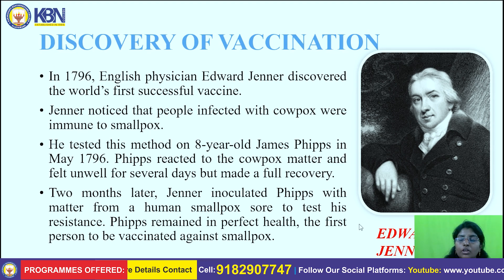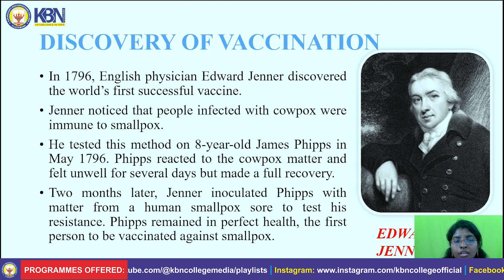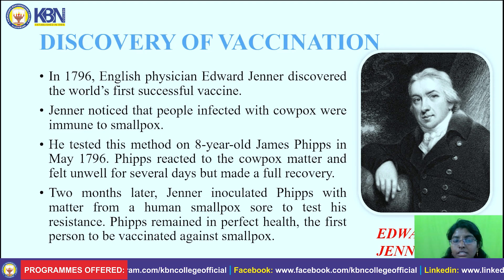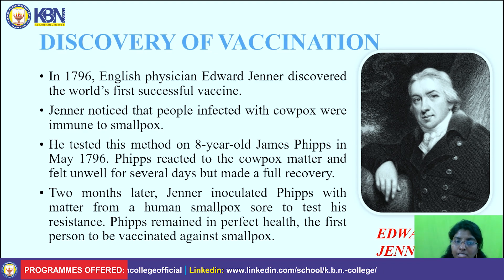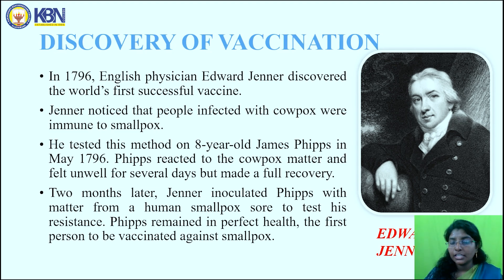Next, the discovery of vaccination. In 1796, English physician Edward Jenner discovered the first successful vaccine. Jenner noticed that people infected with cowpox were immune to smallpox. He tested this method on 8-year-old James Phipps in May 1796. Phipps reacted to the cowpox matter and felt unwell for several days but made a full recovery. Two months later, Jenner inoculated Phipps with matter from a human smallpox case to test his resistance, and Phipps remained in perfect health — making him the first person to be vaccinated against smallpox.